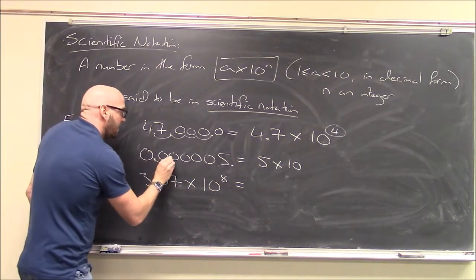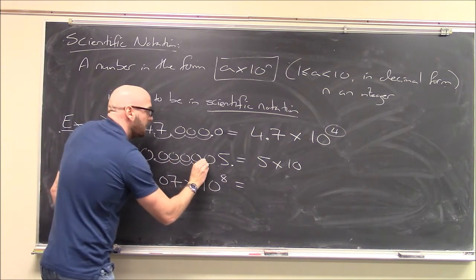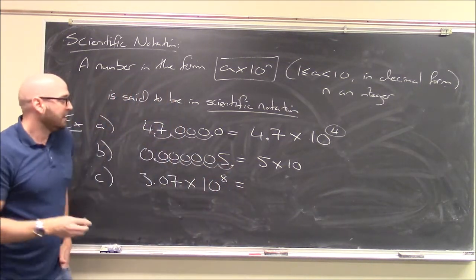So this will be 10 to the... Except now, I'm moving it to the right. I'm making it smaller. I'm making this, or sorry. I'm working with zero point something. So this is going to be a negative exponent. This is 10 to the minus 6.